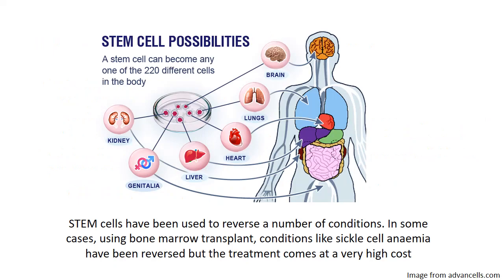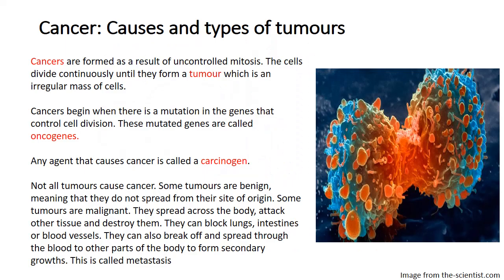A stem cell can become one of the 220 different cell types in the body — as shown in the image from advancedcells.com, you can form the kidney, genitalia, liver, heart, lungs, and brain, depending on the stem cell. Most of these are still in experimental stages. Stem cells have also been used to reverse conditions; for example, bone marrow transplants — which are rich in stem cells — have been used to reverse sickle cell anemia, though the treatment is very expensive and comes at a high physical cost for the patient.